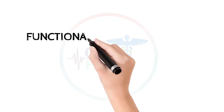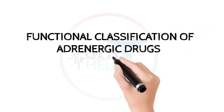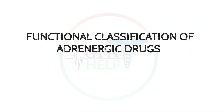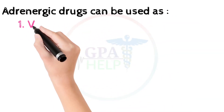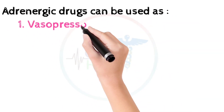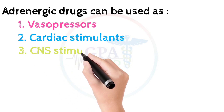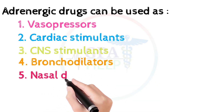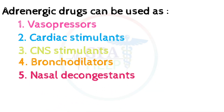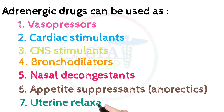Hey, today we are going to learn the functional classification of adrenergic drugs, with tricks. Adrenergic drugs can be used as vasopressors, cardiac stimulants, CNS stimulants, bronchodilators, nasal decongestants, appetite suppressants (or anorectics), and uterine relaxants.